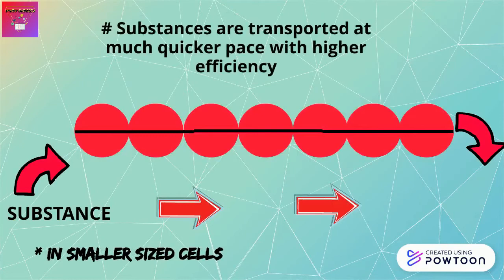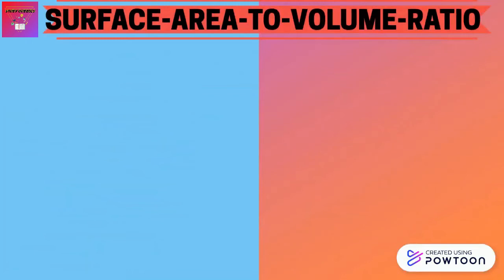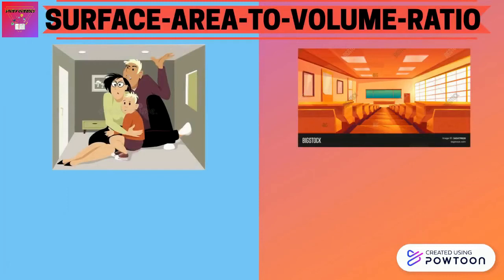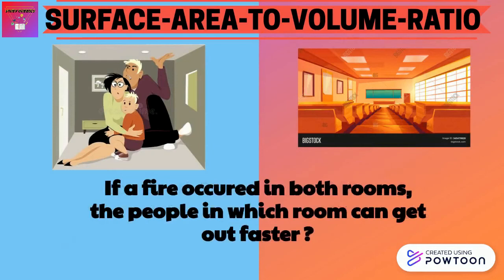Let me give you another mental image to help visualize the importance of surface area to volume ratio and why this relationship favors smaller cells. Imagine a small room and a large room filled with people — the small room holds 20 people and has two doors, while the large room holds 80 people and has four doors. If a fire occurred in both rooms, people in the smaller room could get out faster because it has a more favorable ratio of doors to people.